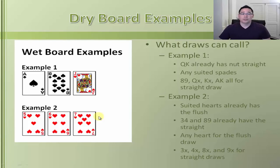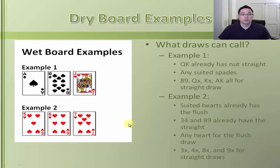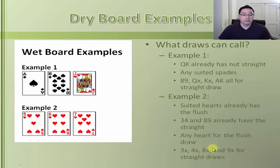On the Five-Six-Seven of hearts board, the flush is already there for anyone holding two hearts. For straights, Three-Four makes the bottom end and Eight-Nine makes the top end. For draws: anyone with one heart is drawing to a flush; Three-x has a gutshot on the bottom end; Four-x has an open-ended straight draw; Eight-x has an open-ended straight draw; and Nine-x has a gutshot straight draw. There are tons of hands already made and tons that can draw out.